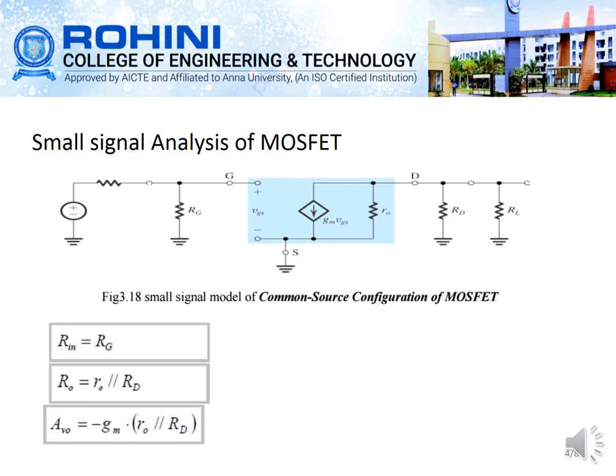The input resistance, output resistance, and voltage gain are derived. Input resistance is RG, output resistance R naught equals R naught parallel RD, and voltage gain is minus GM — since output voltage divided by input voltage gives V = I × R — written as minus GM into (R naught parallel RD).